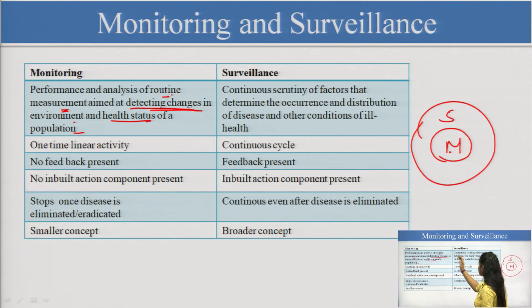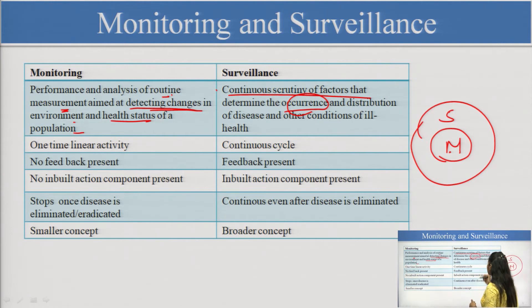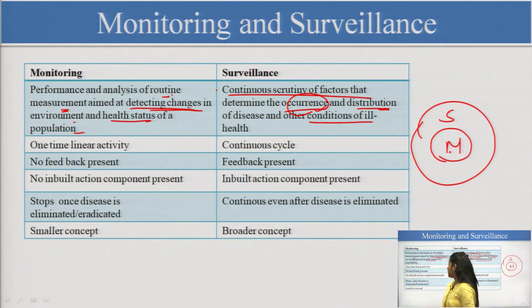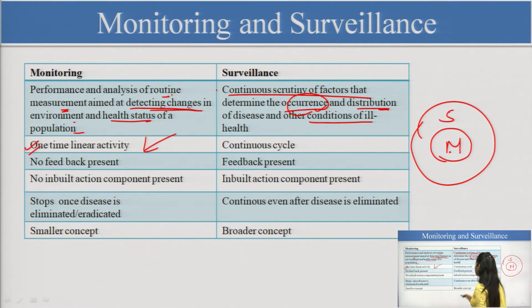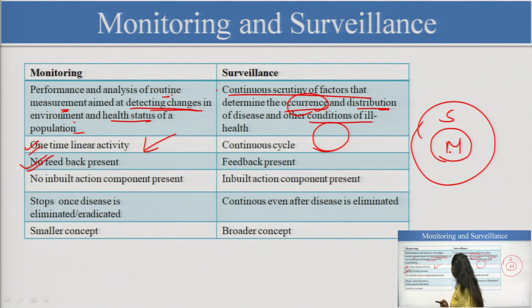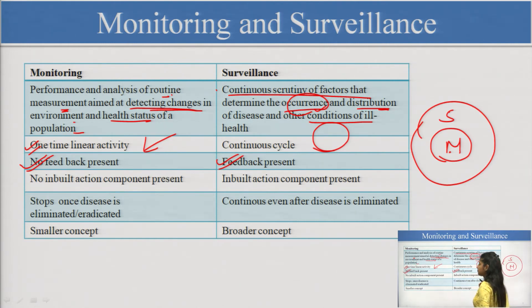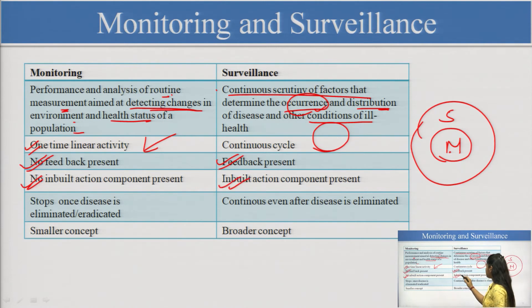In surveillance, continuous scrutiny covers the factors that determine the occurrence, distribution of diseases, and other conditions of ill health. Monitoring is a one-time linear activity done only once, whereas surveillance requires a continuous cycle. In monitoring there is no feedback present, whereas in surveillance feedback is done even after the end of the disease. There is no inbuilt component requirement in monitoring, but for surveillance we have an inbuilt action component — we are changing and implementing plans.